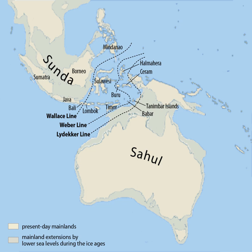The area of Sundaland encompasses the Sunda Shelf, a tectonically stable extension of southeast Asia's continental shelf that was exposed during glacial periods of the last 2 million years. The extent of the Sunda Shelf is approximately equal to the 120-meter isobath. In addition to the Malay Peninsula and the islands of Borneo, Java, and Sumatra, it includes the Java Sea, the Gulf of Thailand, and portions of the South China Sea.